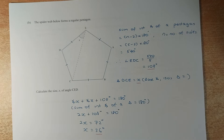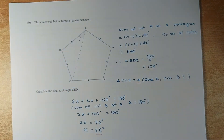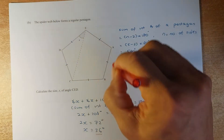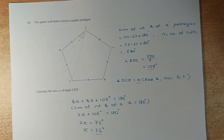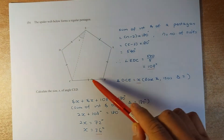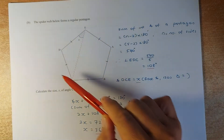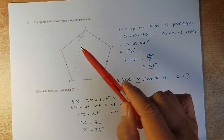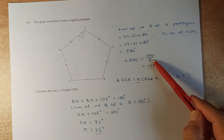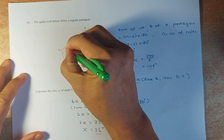Now we proceed to question B. The spiderweb forms a regular pentagon. When they say regular, it means all the sides are the same and all the interior angles are the same. To find each interior angle, we use the formula: (N minus 2) times 180. With N equal to 5, we get 5 minus 2 times 180, which is 540 degrees. Since all angles are equal, we divide 540 by 5, giving each angle as 108 degrees.